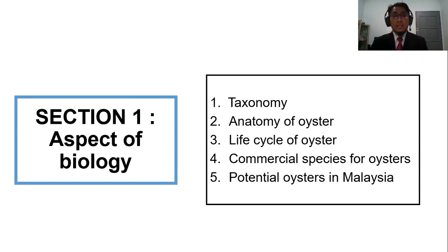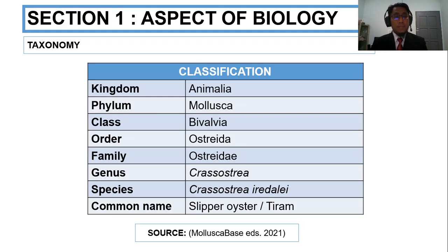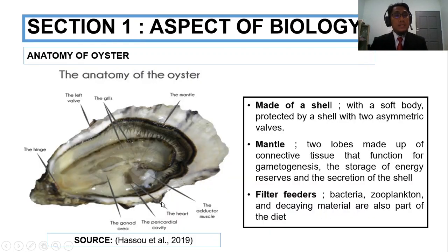Section one covers the anatomy of oyster, life cycle of oyster, commercial species for oyster, and the potential oyster in Malaysia. Now I go to the taxonomy. The oyster, or in Malay called 'tiram,' belongs to the phylum Mollusca and class Bivalvia. The species I choose is Crassostrea iredalei, also known as the sleeper oyster or 'tiram.' This is the anatomy of the oyster.